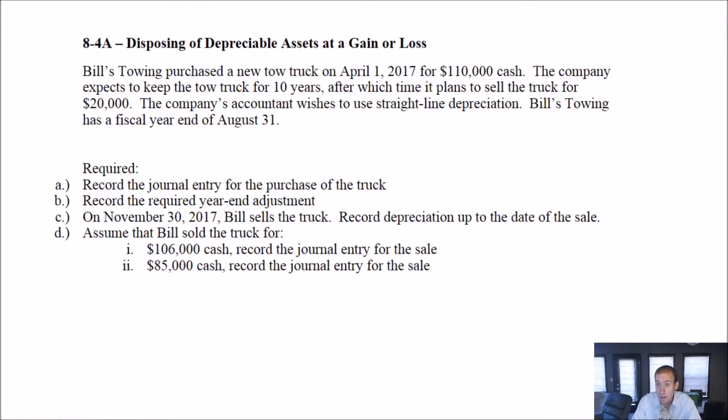All right, let's examine problem 8-4A. It has us disposing of a depreciable asset at a gain or a loss. So we're going to buy an asset, we're going to use it for some time, and then we're going to sell it, and the company's either going to make a gain or a loss on the sale. So let's have a look. Bill's Towing purchased a new tow truck on April 1st, 2017 for $110,000 cash. Okay, so let's do this journal entry. Let's do the journal entries kind of as we see them.